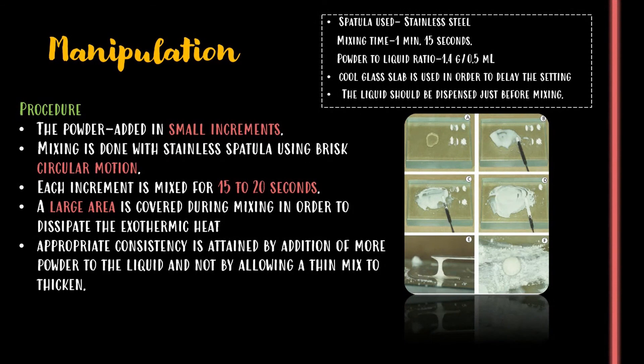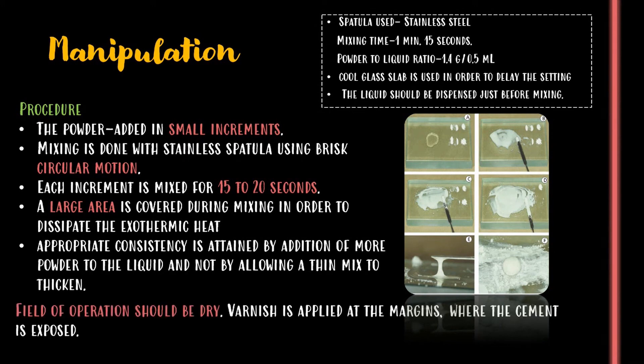The powder is added in small increments; mixing is done with a stainless steel spatula using brisk circular motion. Each increment is mixed for 15 to 20 seconds over a large area to dissipate the exothermic heat. Appropriate consistency is attained by addition of more powder to liquid and not by allowing a thin mix to thicken. The field of operation should be dry, and varnish is applied at the margins where the cement is exposed.